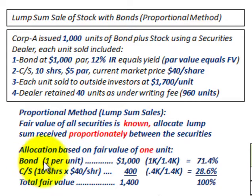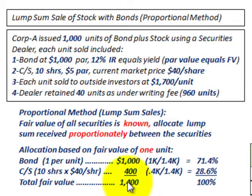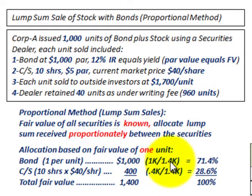One unit includes one bond selling at its par value of $1,000, and 10 shares of common stock at $40 per share — the market price — giving $400 for the stock. So the total fair value on one unit is $1,000 for the bond plus $400 for the stock, equaling $1,400. Proportionately, the bond gets $1,000 divided by $1,400, or 1 divided by 1.4, which approximates 71.4% allocated to the bonds.